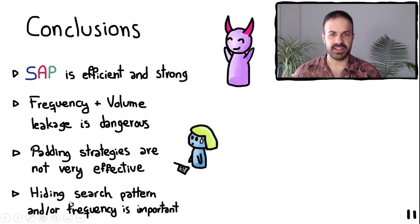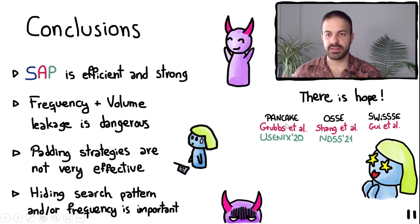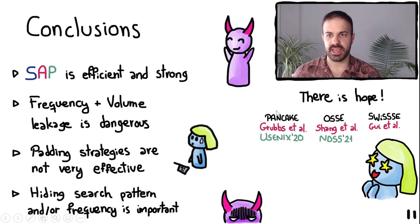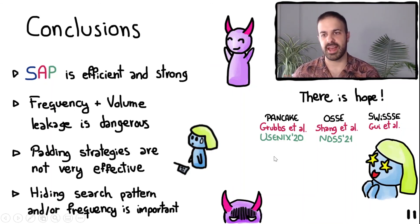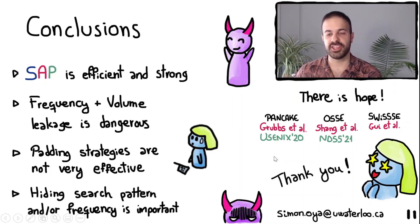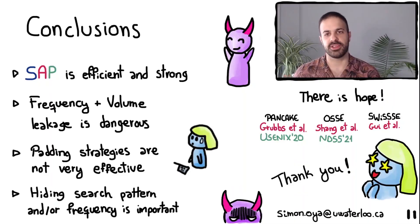In conclusion, we have proposed a new attack that is both efficient and strong. Combining volume and frequency leakage is very effective, and volume padding strategies are generally not effective against our adapted attack. Therefore, hiding the search pattern and query frequency is very important. Recently, new works have emerged that either hide query frequencies like Pancake, or hide the search pattern like OSSC and Suisi. We think these schemes are moving in the right direction and are promising, and we would like to study whether we can adapt our attack against them in the future. This concludes the presentation — thank you for listening and we will be happy to take questions.